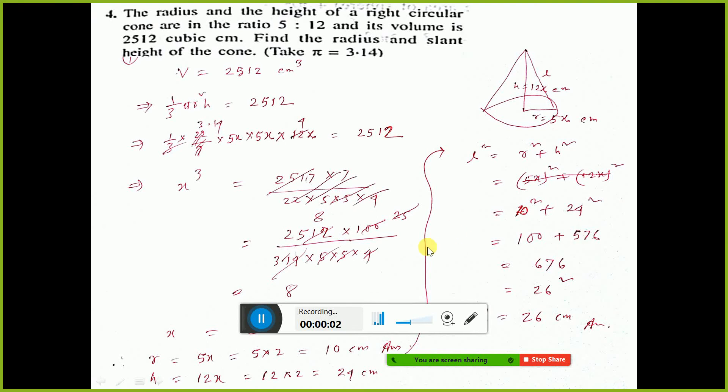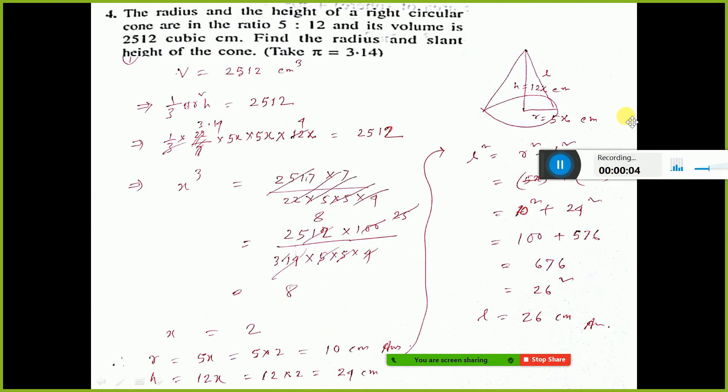The radius and the height of a right circular cone are in the ratio. So, ratio given. If this ratio given, then you know how to consider. Height, radius and height in the ratio 5 is to 12. So, radius will be 5x, height will be 12x.